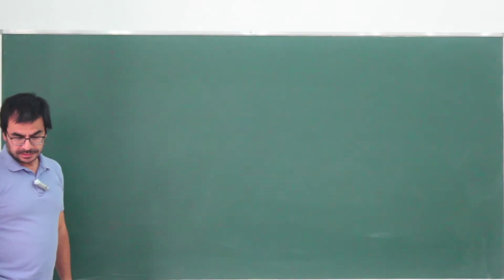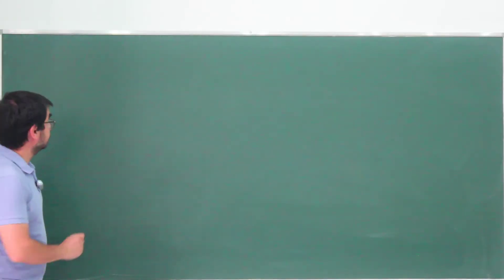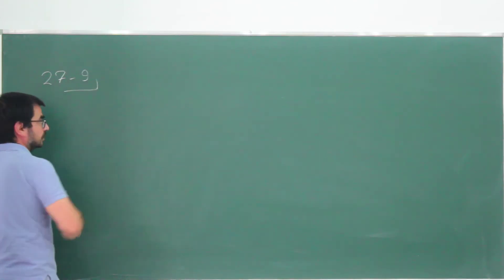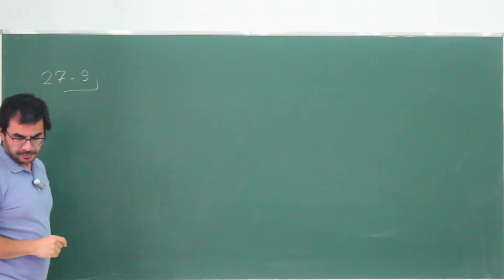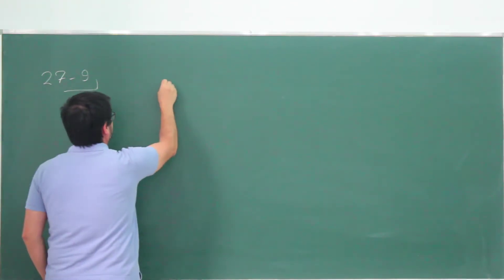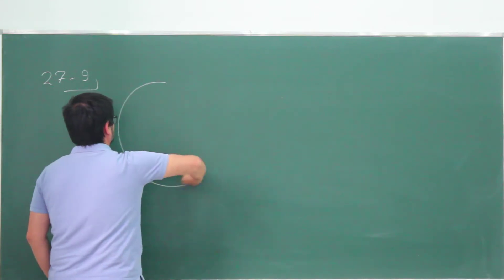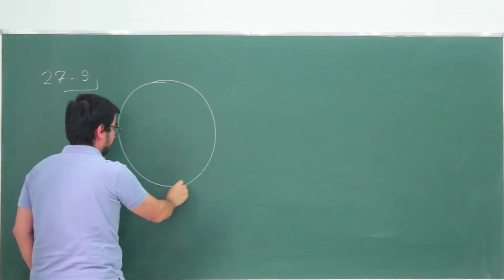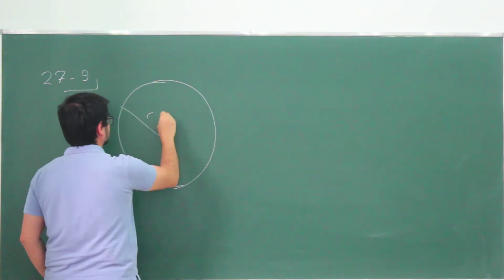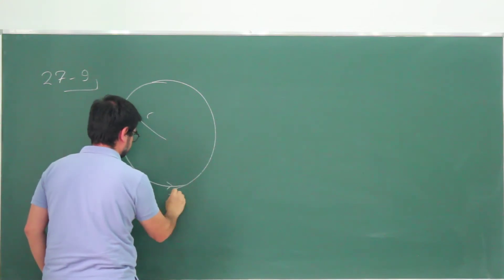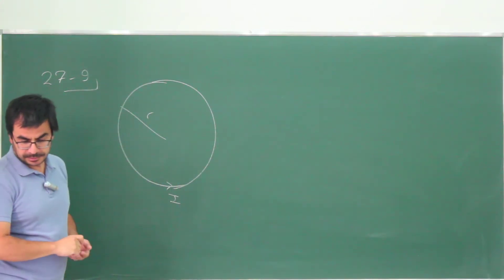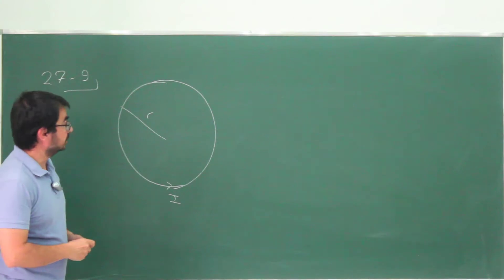So this is problem 27-9. In this problem, we have a current-carrying circular loop of wire of radius r, carrying a current of magnitude I, and this is partially immersed in a uniform magnetic field.